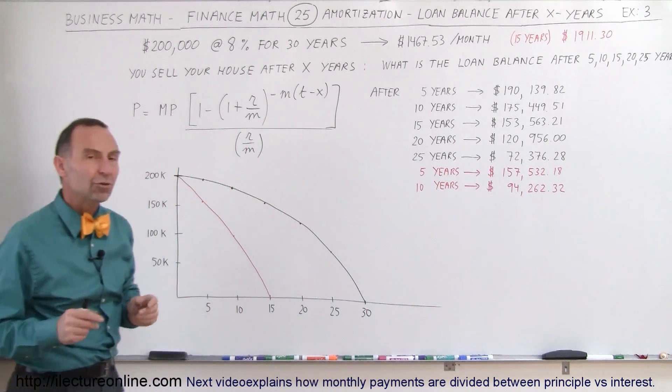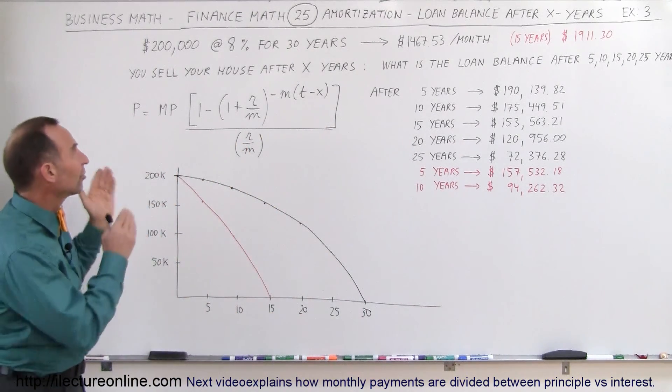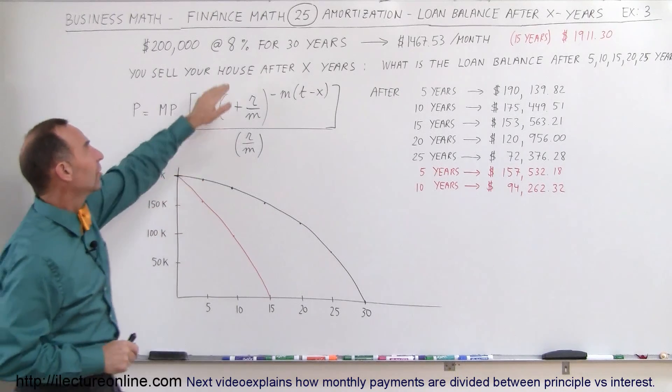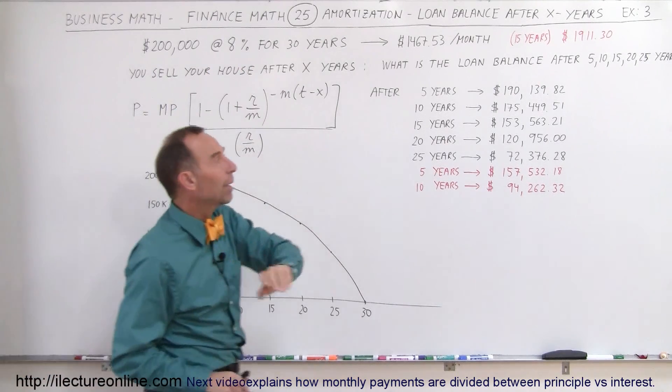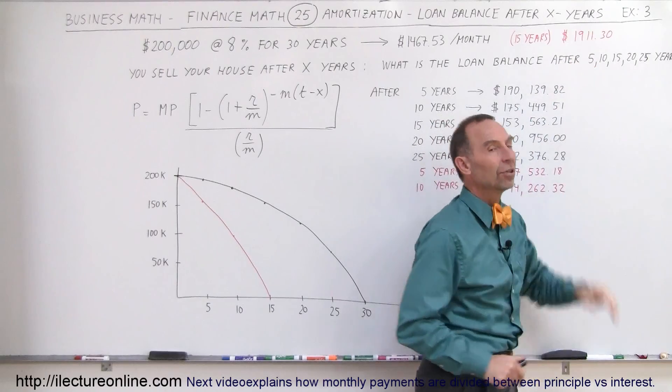Now if instead you get a 15-year loan for the same amount, $200,000, same interest rate, 8%, your payments will go up to $1,911 per month.